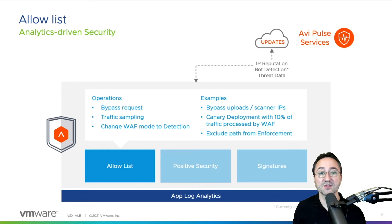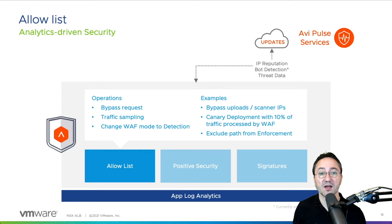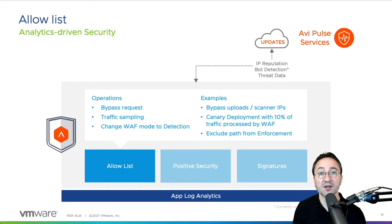The third use case is changing the RAV operation mode into detection for any matching path or request type. This allows you to keep the general RAV policy in enforcement but test parts of the application using the detection mode.